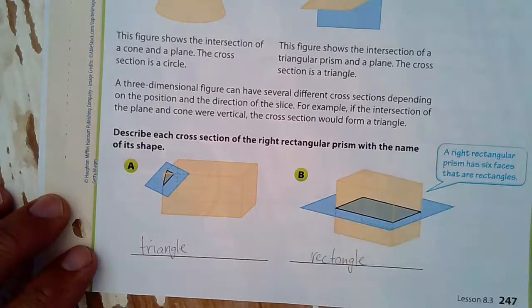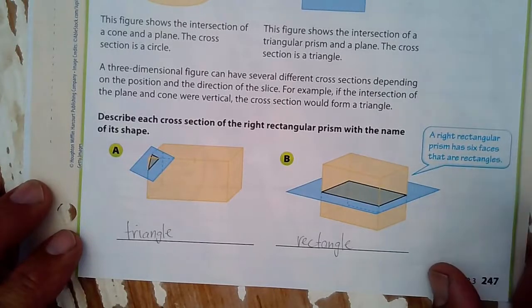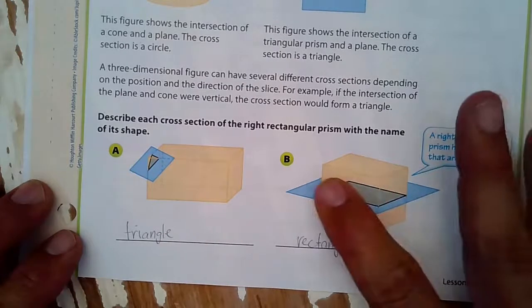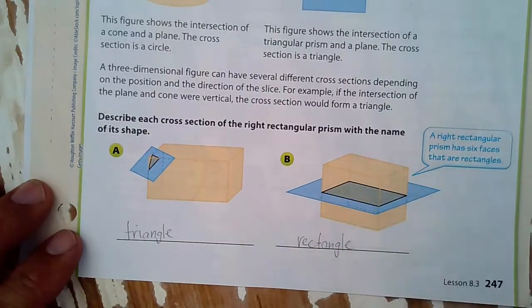And we have another one right here. A right rectangular prism has six faces that are rectangles. So I might see this right here. Don't look at the cross-section quite yet, or the blue slice, which is a plane.